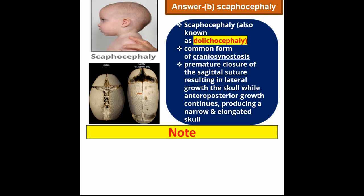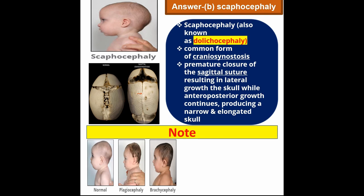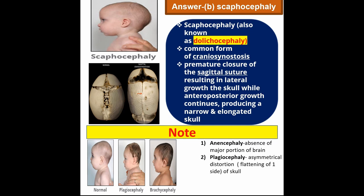Other craniosynostosis types include: Anencephaly — the absence of a major portion of the brain, skull, or scalp; it is a type of neural tube defect. Plagiocephaly — asymmetrical distortion of the skull, meaning flattening of one side. Acrocephaly — premature closure of the lambdoid and coronal sutures, resulting in an abnormally high peak or dome-shaped head.